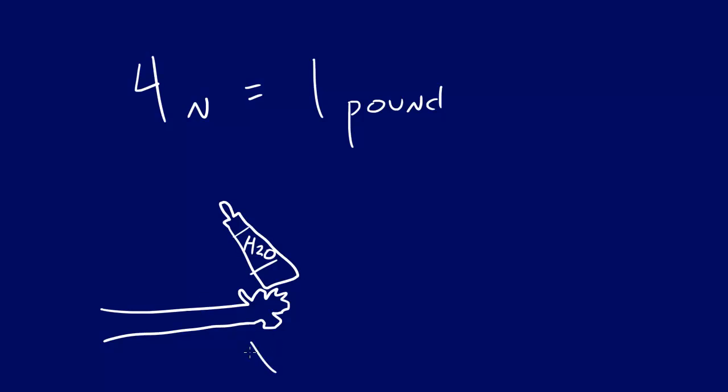But say that you were holding a one pound bottle of water, 16 ounces. This is supposed to be your hand right here. Well if this bottle of water was 16 ounces or one pound, then due to gravity the bottle of water would be pushing down on your hand with a force of four newtons. Right like that. So basically on earth, one pound equals two newtons.